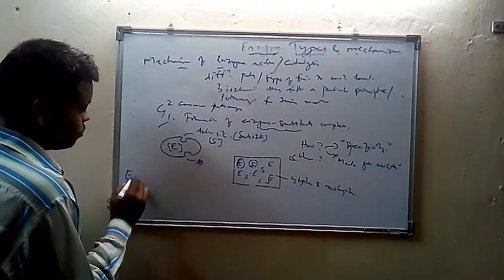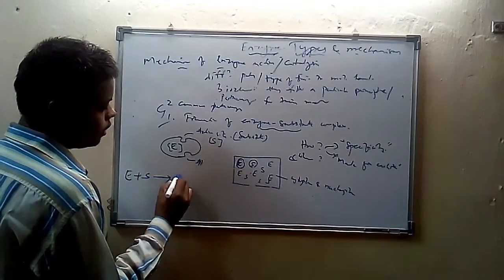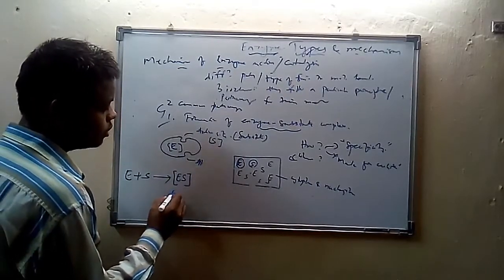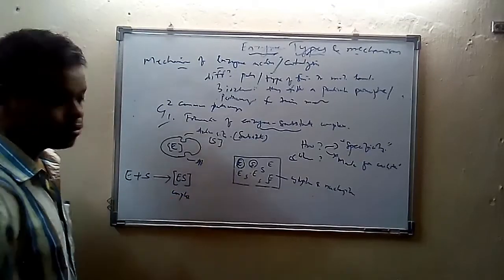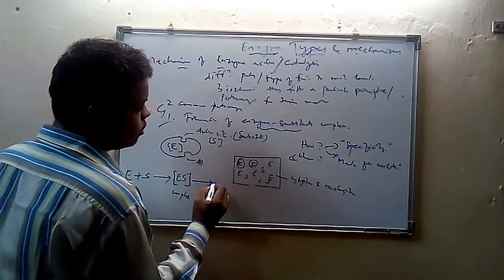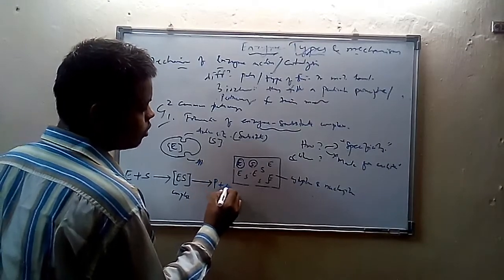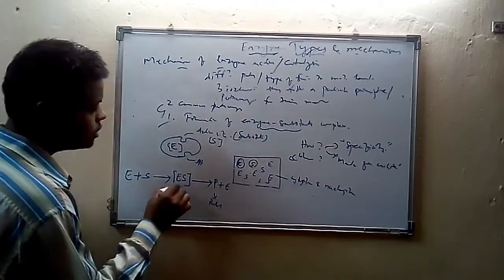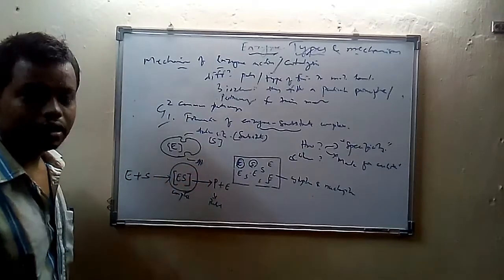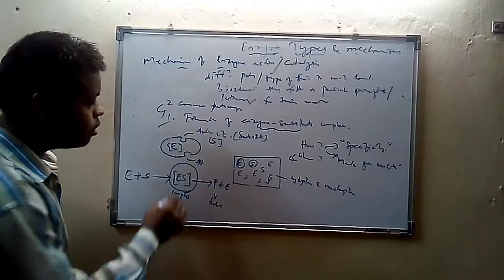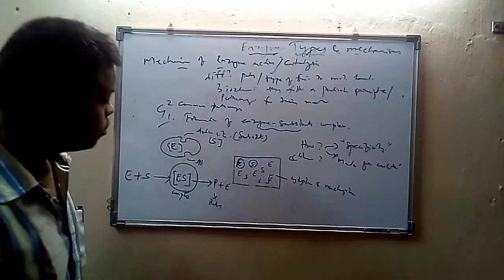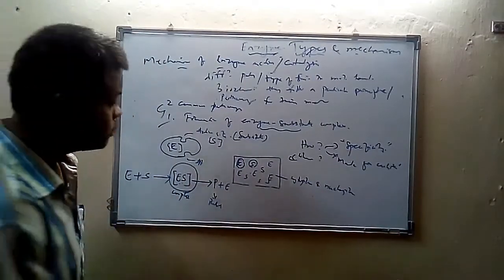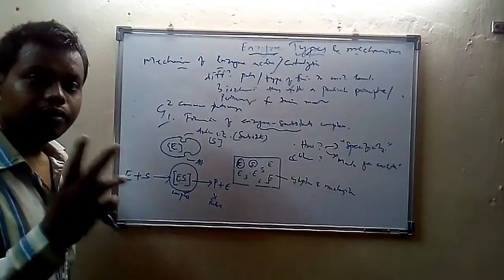When a particular enzyme reacts with a particular substrate, an intermediate is formed, and this intermediate is called the enzyme-substrate complex. This enzyme-substrate complex later provides us the product, while the amount of enzyme is recovered. So the enzyme-substrate complex is the intermediate of a biochemical reaction. To explain how a enzyme binds with a substrate, there are two different hypotheses.